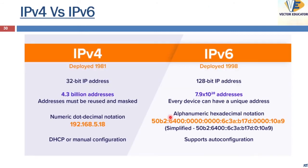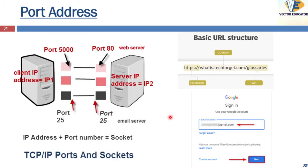During communication, switches keep a record of the MAC address of devices in their network. Logical addresses are used for universal communication. The logical address is also called the IP address or the internet protocol address. Currently there are two versions: IPv4, which is a 32-bit address capable of supporting 2 to the power of 32 nodes, and IPv6, which has a 128-bit address capable of supporting 2 to the power of 128 nodes — adopted due to the shortage of IPv4 addresses. Routers use IP addresses for their routing.